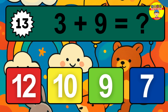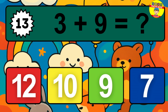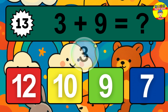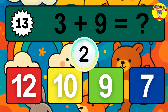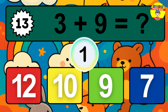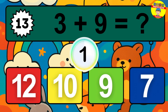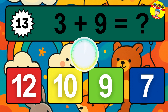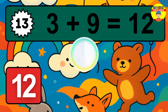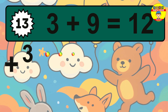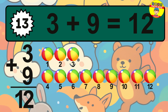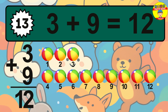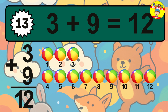Question 13. 3 plus 9 equals what? The answer is 3 plus 9 is 12.